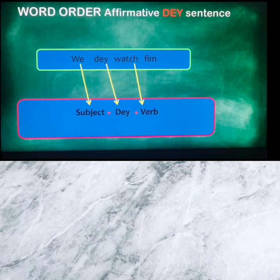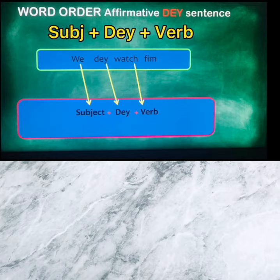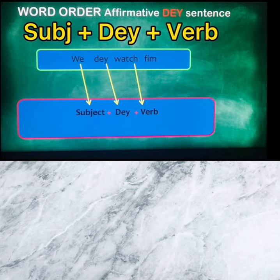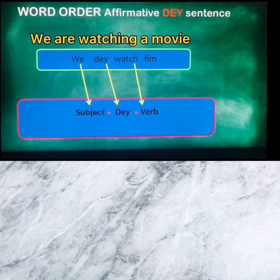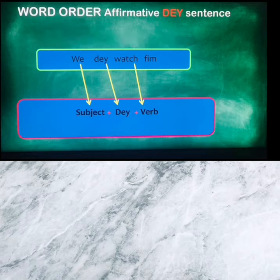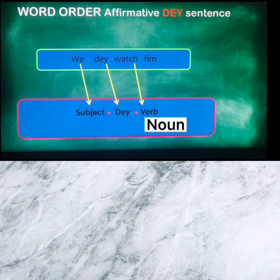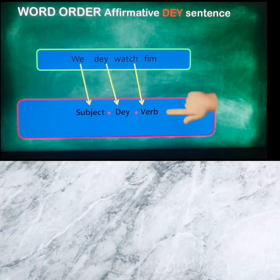Now let's take a look at the word order in the affirmative form in Nigerian Pidgin English, then form sentences with examples. We have: subject plus the marker D plus the verb. Remember, in place of the verb in the word order, you can also have either an adjective, an adverb, or a noun, depending on the sentence. You can refer to this word order to help you construct affirmative sentences with the marker D in Nigerian Pidgin English on your own, anytime.